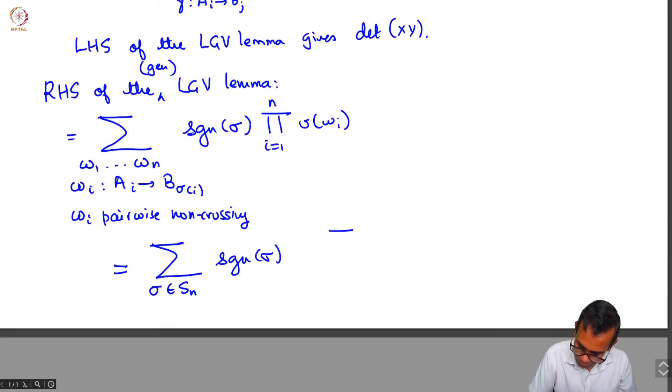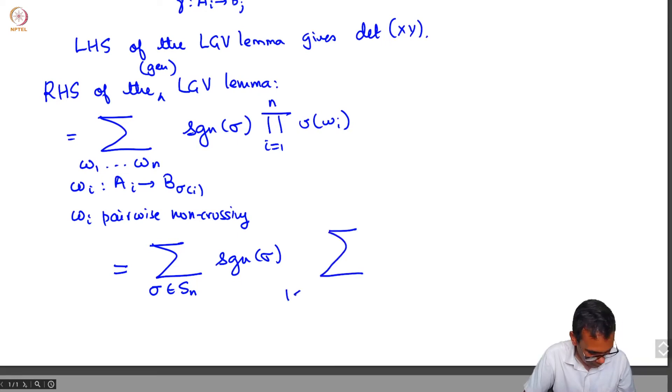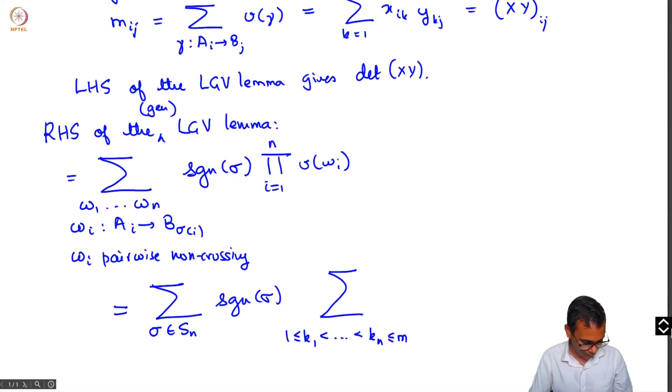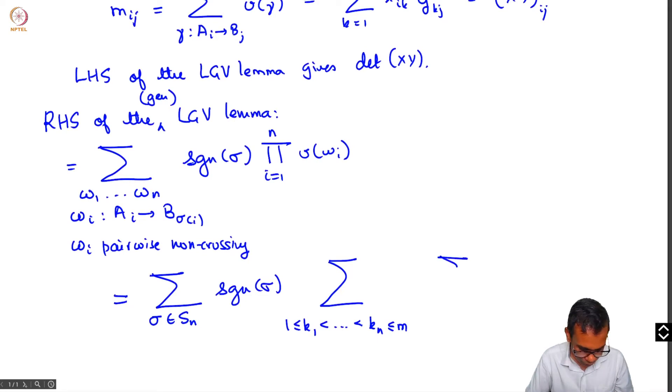So let's say they pass through the points k1, k2, ... kn. There will be n of those points. This will be a sum over all. I'll write those points in decreasing order, not necessarily in the order in which the paths pass through. You choose some n points through which they have to pass. These n paths will have to pass through n distinct points because they are non-crossing paths.